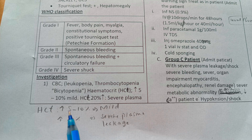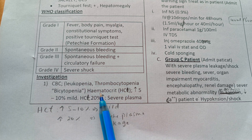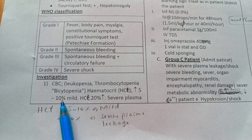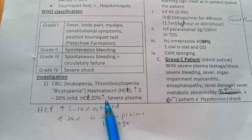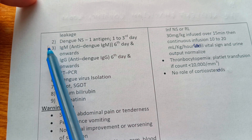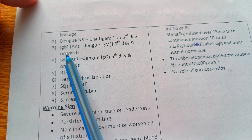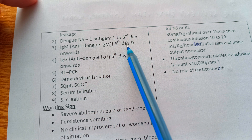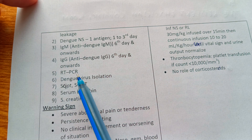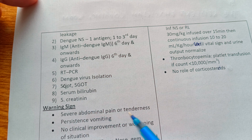Investigations: CBC will show leukopenia, thrombocytopenia, bicytopenia, and increased hematocrit. If hematocrit increases 5–10%, that is mild; if increased by 20%, there is severe plasma leakage. Do dengue NS1 antigen from day one to three of fever, and dengue serology IgM/IgG from day six onwards. Can also do PCR, dengue virus isolation, SGPT, SGOT, serum bilirubin, and serum creatinine.